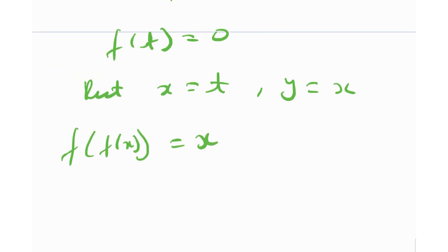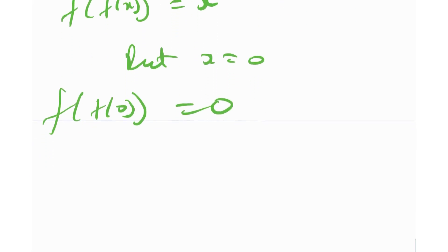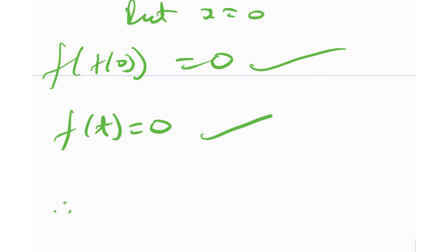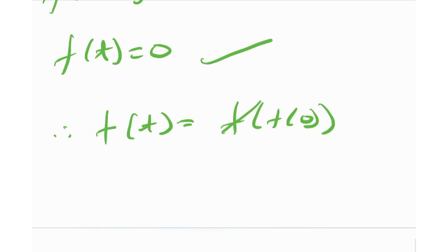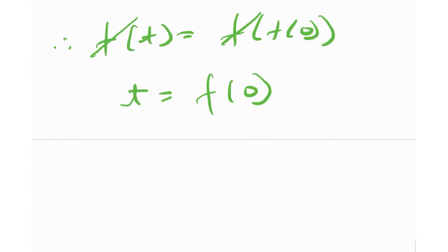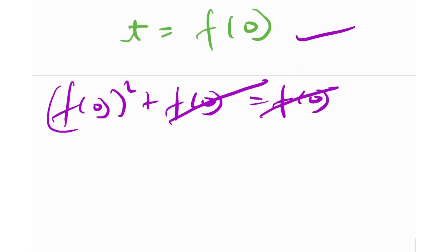Again, let t = f(0)² + f(0), so f(t) = 0. Plugging x = t, y = x gives f(f(x)) = x. f is an involution. Now plug in x = 0: f(f(0)) = 0. Notice f(t) = 0 and f(f(0)) = 0. Since f is bijective — a one-to-one correspondence — and injective, f(t) = f(f(0)) implies t = f(0). But t = f(0)² + f(0). Cancelling f(0) from both sides gives f(0) = 0.